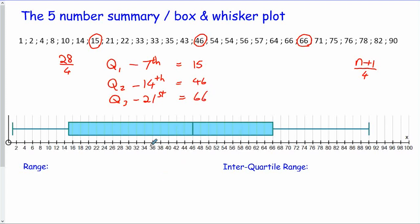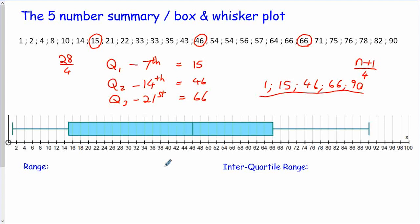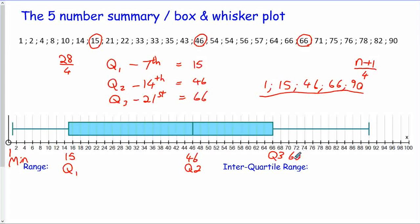So the five-number summary consists of the smallest number, which is 1, then Q1 which is 15, the median Q2 which is 46, Q3 which is 66, and the largest number which is 90. Those are the numbers we use to draw a box and whisker plot: 15 is the left-hand edge of the box, 46 is the median, 66 is Q3, and the maximum value is 90.